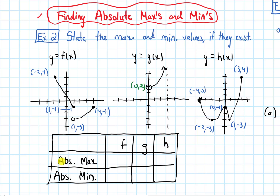Remember that the absolute max value is the largest y value. For the function f of x, the largest y value occurs at the point (−2, 4), and the y value is 4. So the absolute max value for f is 4.